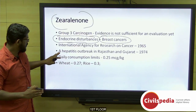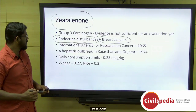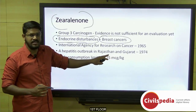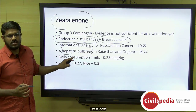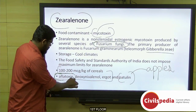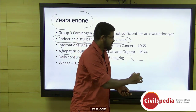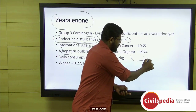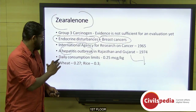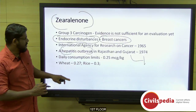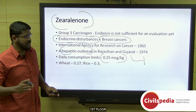Aflatoxin was particularly serious because in 1974, in the states of Rajasthan and Gujarat, there was a hepatitis outbreak. When scientists studied this outbreak, it was linked to aflatoxin fungal toxin in cereals. More than 400 people were infected by this hepatitis and more than 100 people passed away during this outbreak. The daily consumption limit is 0.25 micrograms per kilogram, a limit not prescribed by India's Food Safety and Standards Authority of India.